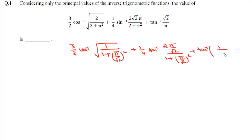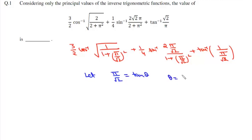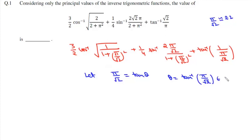The third term is tan⁻¹ of 1/(π/√2). Now we let π/√2 = tan θ, so θ = tan⁻¹(π/√2). Since π/√2 ≈ 2.2, and tan⁻¹(1) = π/4 while tan⁻¹(∞) = π/2, this θ lies between π/4 and π/2.